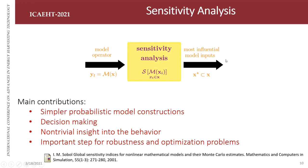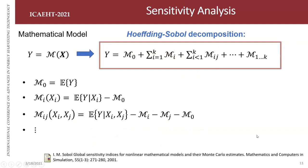My contributions about these tools: we can simplify our probability model because we just consider the parameters that most affect our system, help us in decision making, provide nontrivial insight into behavior, mainly because we study a complex dynamic system, and it can be a tool for robustness and optimization problems.